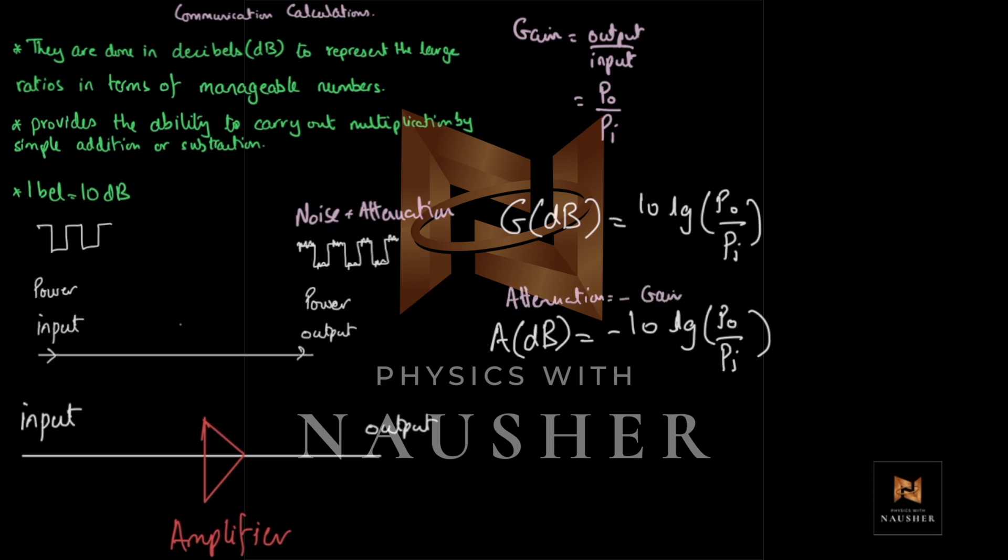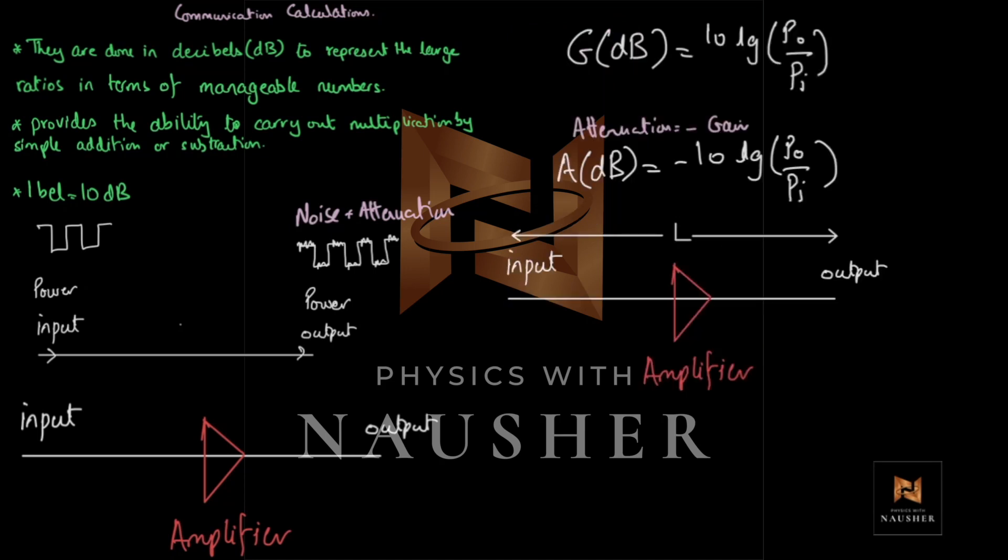Now, there's one particular part which they can ask you in which they can also give you the length of this wire or this optic fiber. And they can say calculate the attenuation per unit length. So, this formula will give you the attenuation from the beginning to the end. Whatever happens in this wire. But they could ask you, what is the attenuation per unit length? So attenuation per unit length would be given by this formula. Attenuation per unit length, APL. First of all, the unit will be decibel per kilometer.